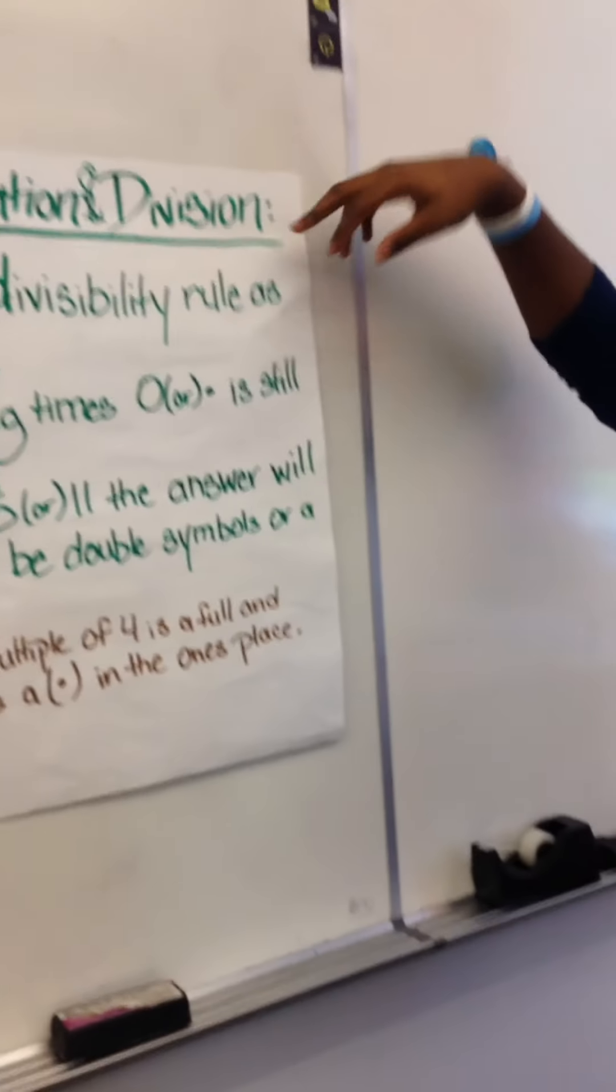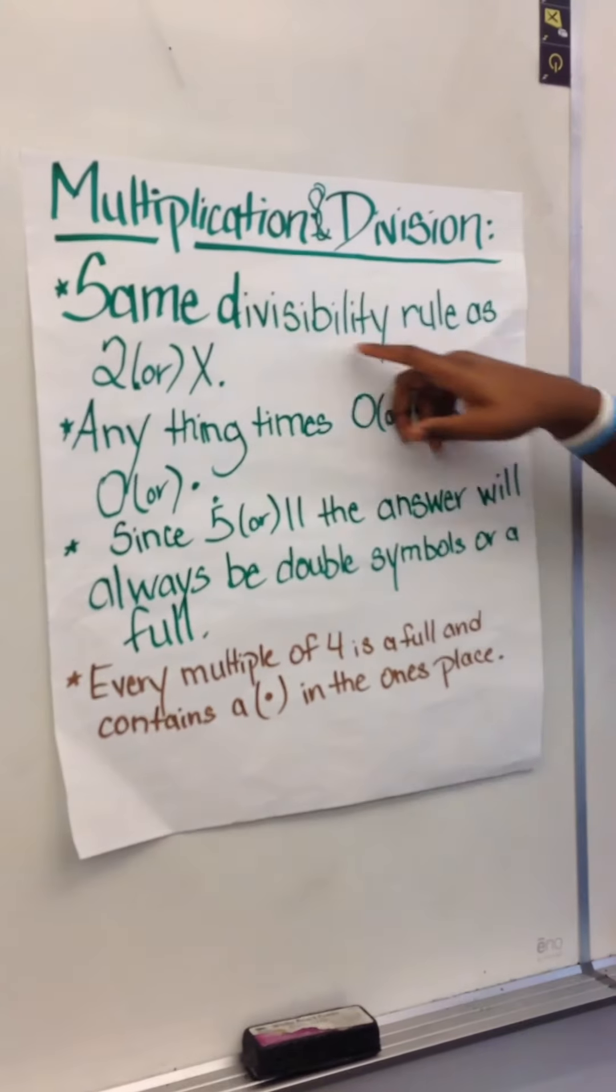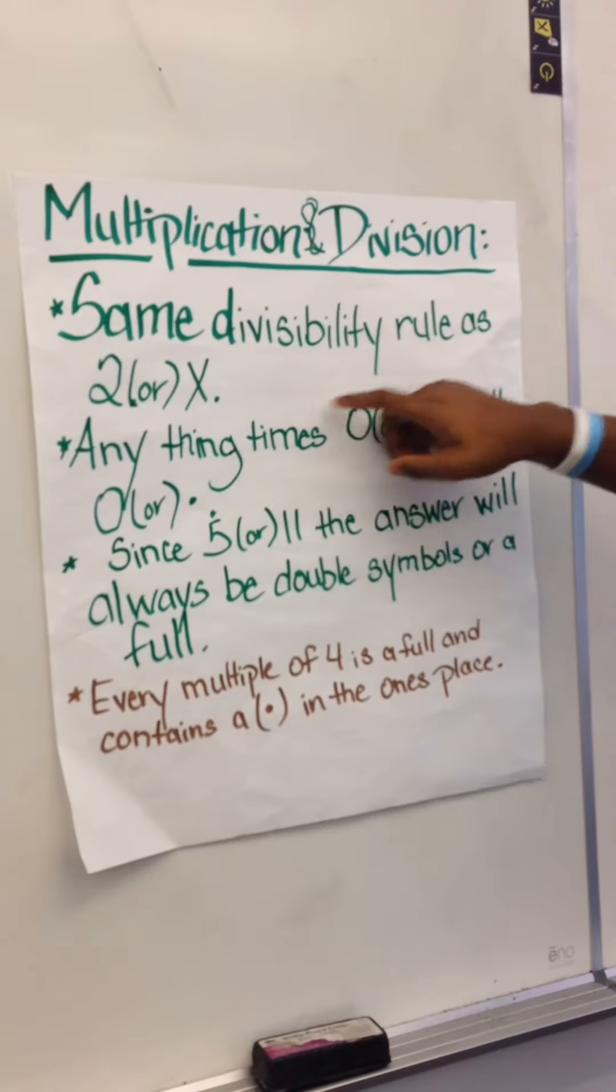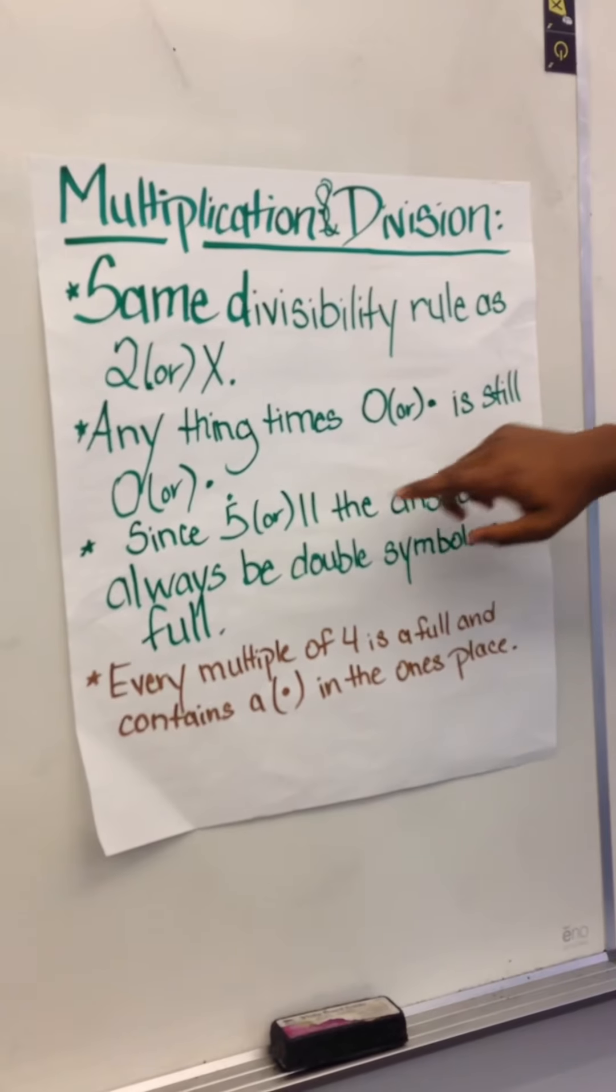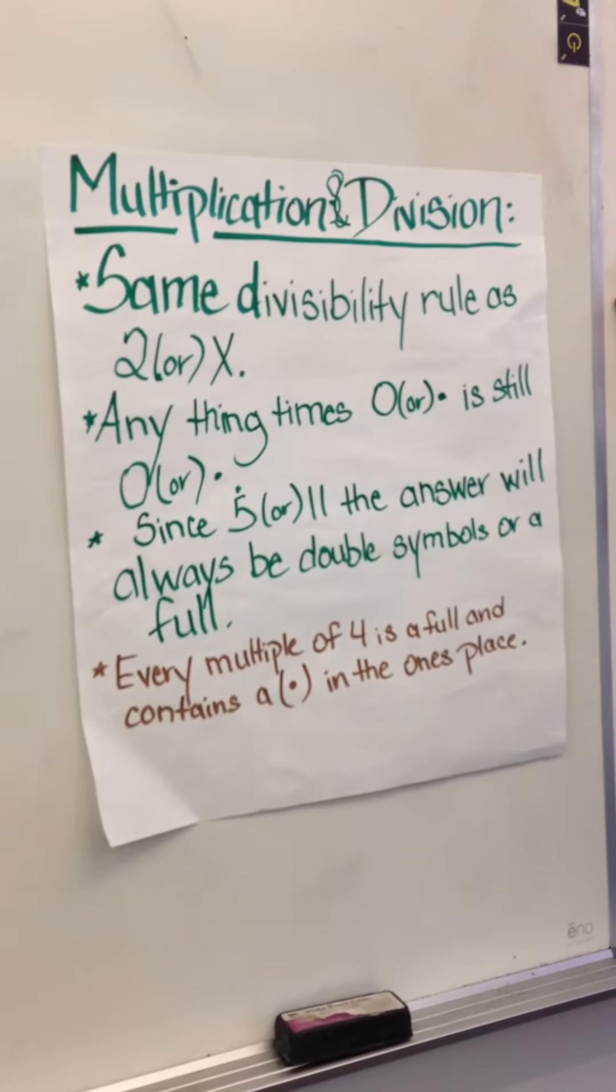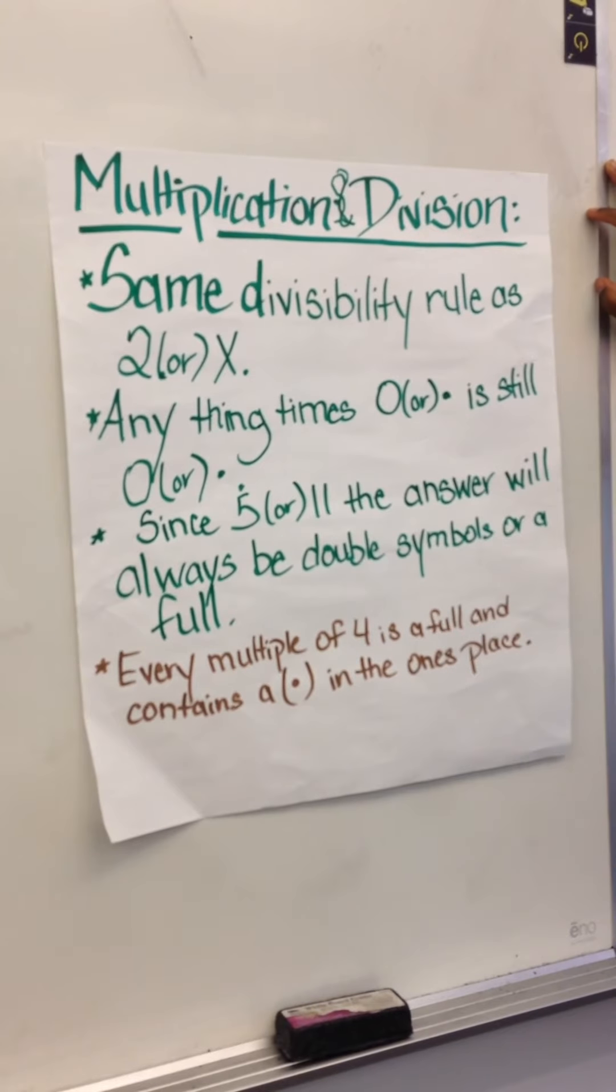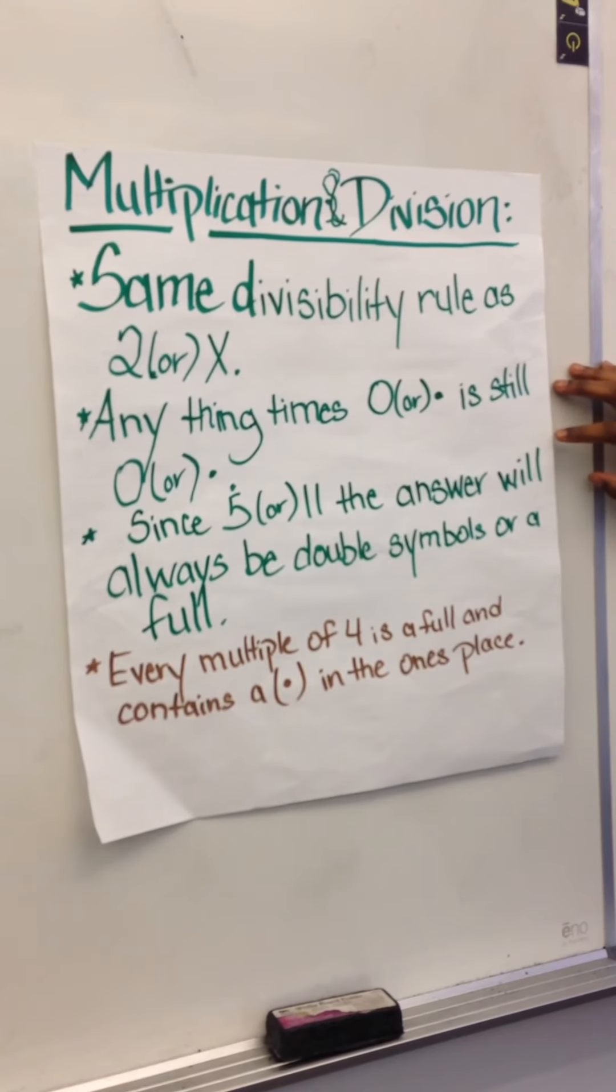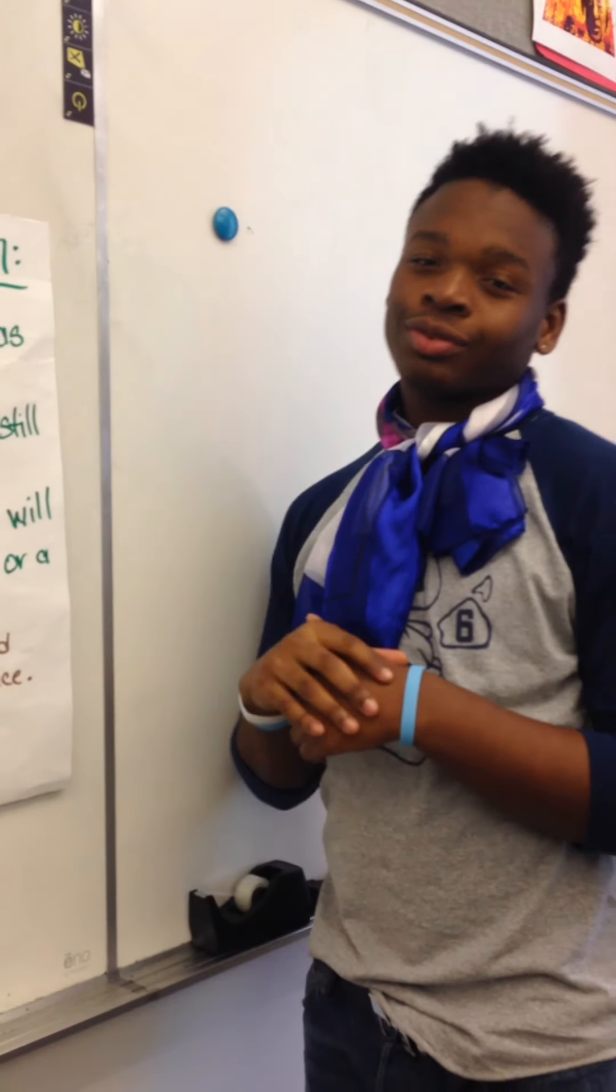This is the multiplication and division rules that we use to solve them things right here. And the same divisibility rule as two or x: anything times zero or dot is still zero or dot. Since five or two ones, the answer will always be double symbols or four. Every multiple of four is a four and contains a dot in the ones place, and that's it.